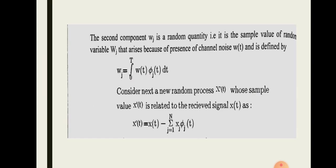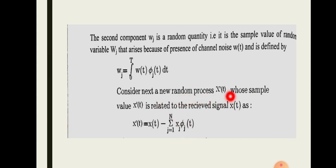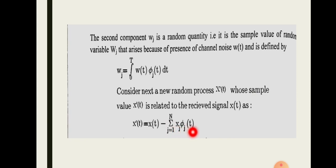Now consider the next new random process X'(t), whose sample value x'(t) is related to the received signal x(t) as: x'(t) = x(t) − Σ (j=1 to N) xj · φj(t). We consider x'(t) as a new random process defined in this way.